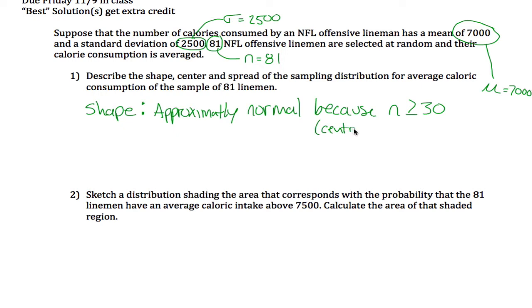You don't have to say it's the central limit theorem. If you just say that n is greater than or equal to 30 and it's approximately normal, you're good. The center of this distribution is going to be 7,000, and that's because the mean of the sampling distribution is just equal to the mean of the population.